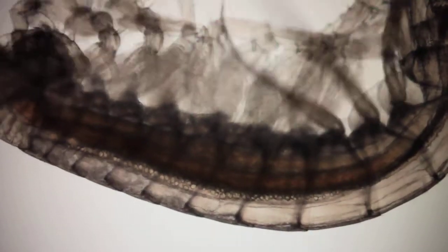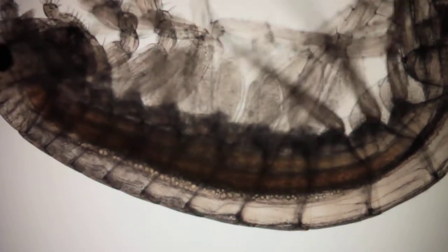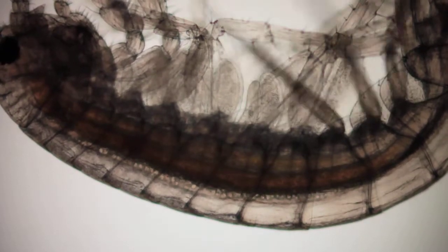She's quite active. What I've got her on is a slide with a depression in it. I have made it deeper by putting four dots of nail polish around the center depression to make a little thicker stand there when I put the cover slip on it. Yeah, she's got eggs there it looks like.